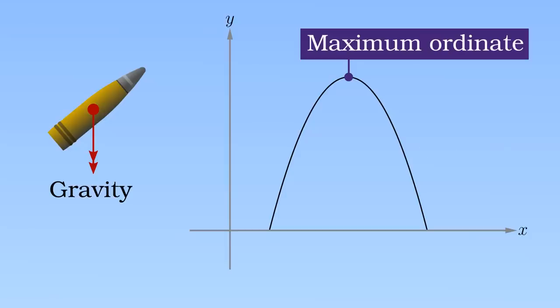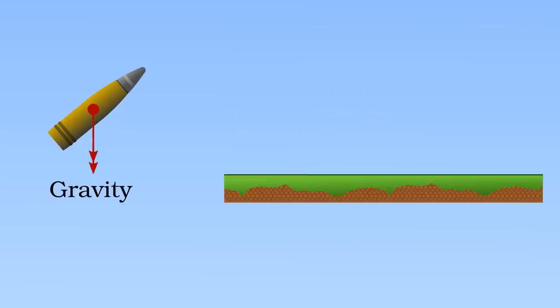If gravity is the only force acting on the shell, the maximum ordinate is the halfway point of the trajectory and the second half is a mirror image of the first. There are two possible elevations which have the same range, so it is actually possible to fire one shell on a higher trajectory, then depress the gun and with careful aiming, fire again to hit the same spot at the same time with the second shell.